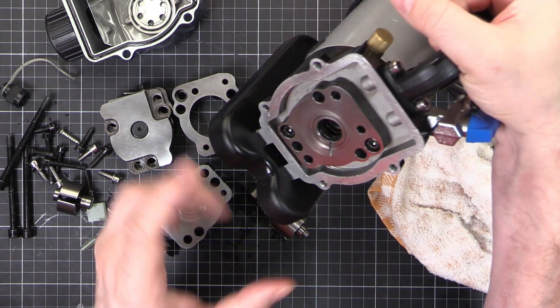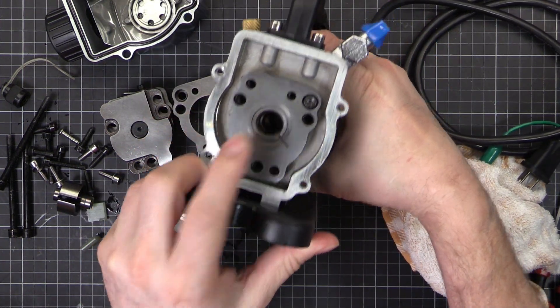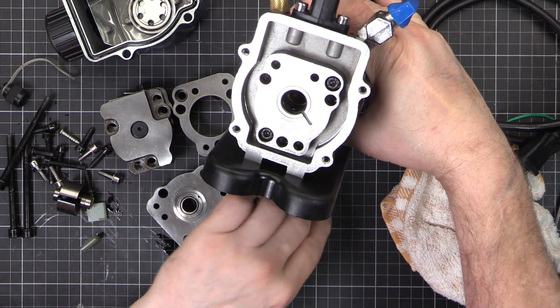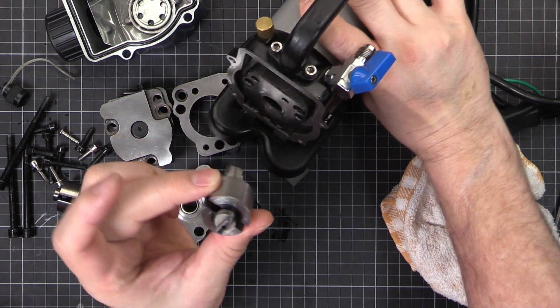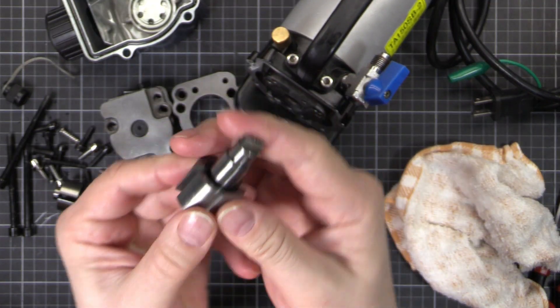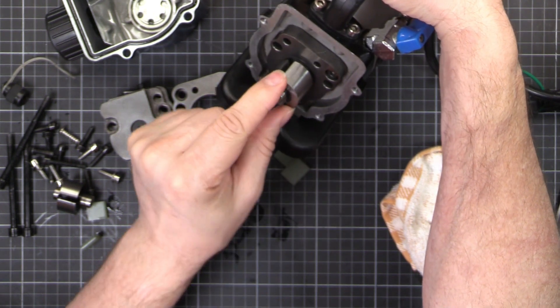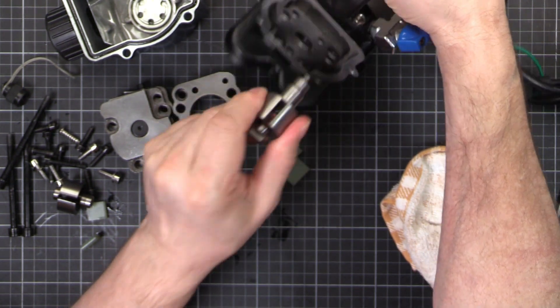So basically what happens is we've got the motor section here and it's got a little keyed shaft in there. And we've got one of these - you see that's got a flat on the end there. And that goes in, clicks into the hole. And you see this, it's got a kind of a slot all the way through.